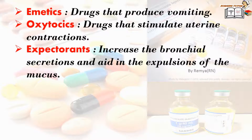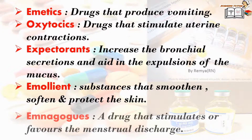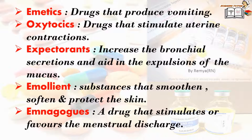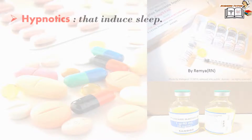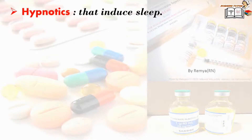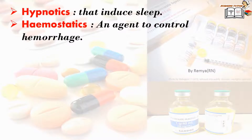Emollients are substances that smoothen, soften, and protect the skin. Emmenagogues are drugs that stimulate or favor the menstrual discharge. Hypnotics are the drugs used to induce sleep.